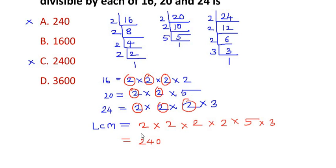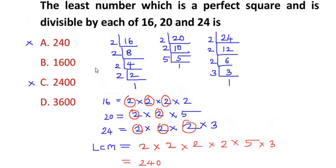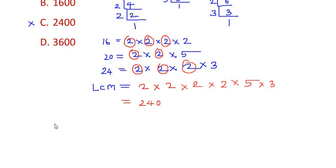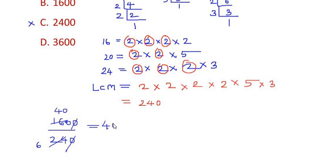Now we check which perfect square option is perfectly divisible by the LCM of 240. Trying 1600 divided by 240: simplifying by cancelling a 10 from each, we get 160 over 24, which reduces to 40 over 6, and further to 20 over 3. We do not get an integer, so 1600 is not perfectly divisible by 240 and is not the right option.